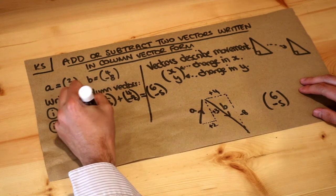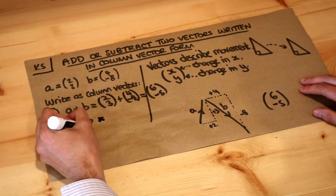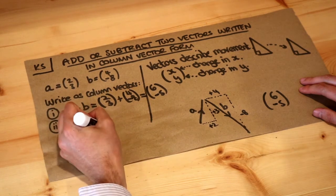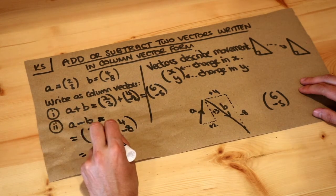And then similarly when you subtract vectors that's going to be (2, 3) because a is (2, 3) and we're subtracting b which is (4, -8).